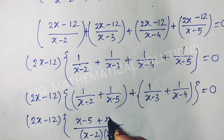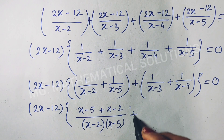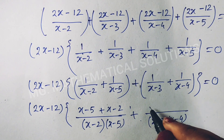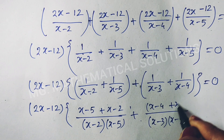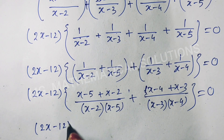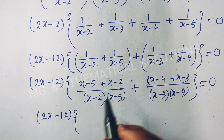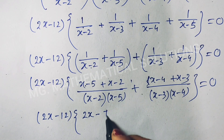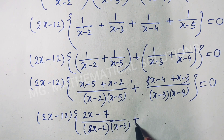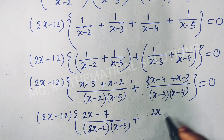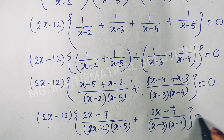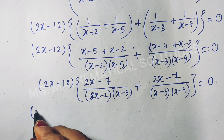So (x-5) plus (x-2) over (x-2)(x-5), and the LCM of (x-3) and (x-4) is (x-3)(x-4). So (x-4) plus (x-3) over (x-3)(x-4) equal to 0. This gives (2x-7) over (x-2)(x-5) plus (2x-7) over (x-3)(x-4) equal to 0.